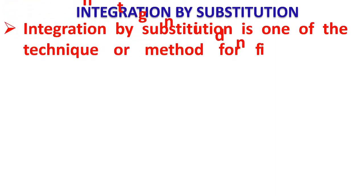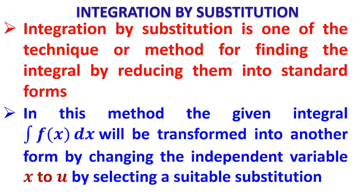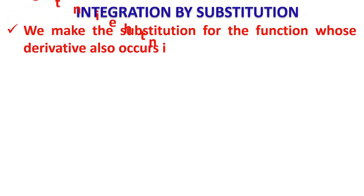Integration by substitution is one of the techniques or methods for finding the integral by reducing them into standard forms. In this method, the given integral ∫f(x)dx will be transformed into another form by changing the independent variable x to u, t, or z by selecting a suitable substitution. We make the substitution for the function whose derivative also occurs in the integrand.